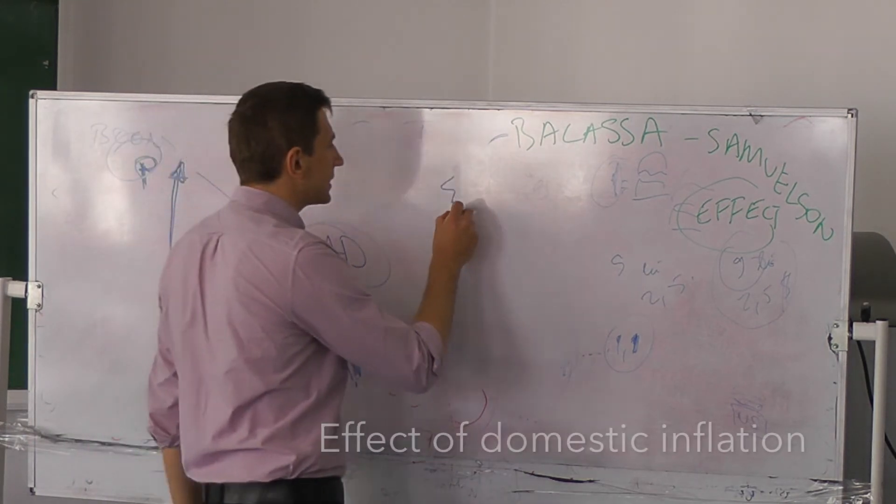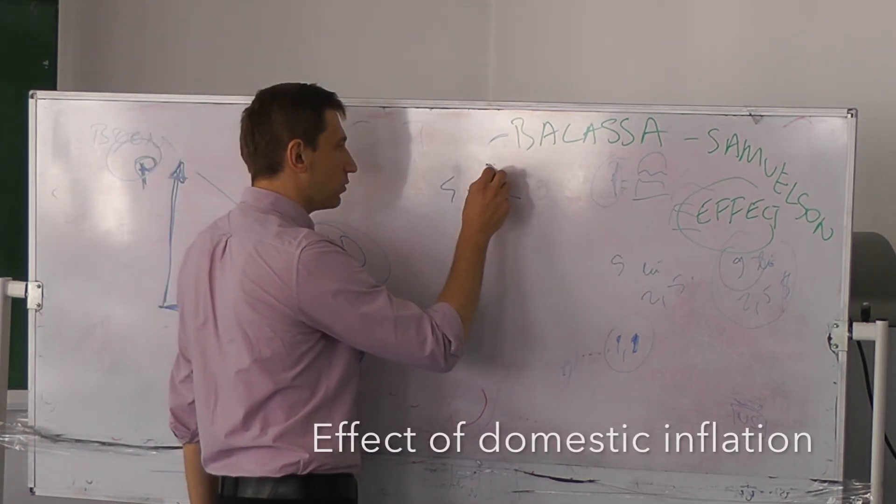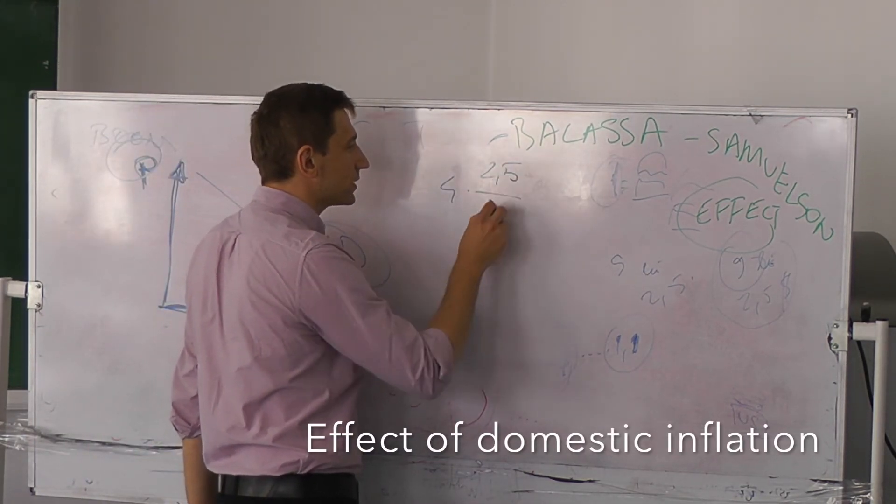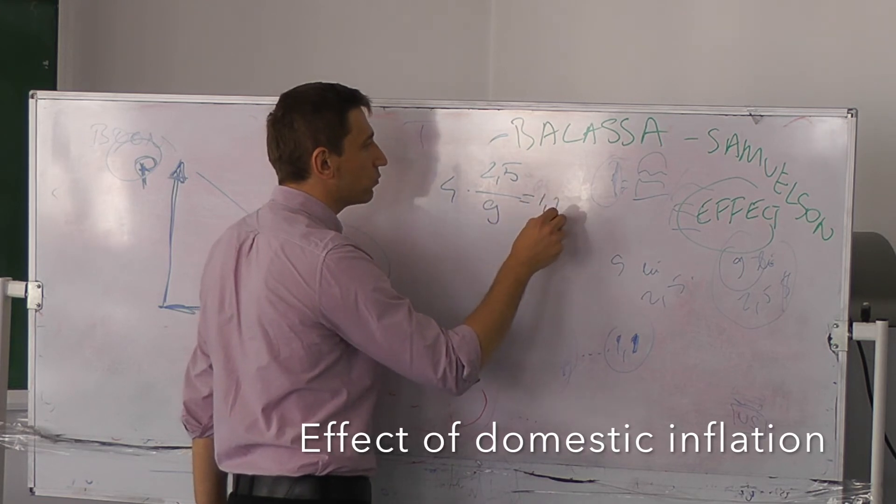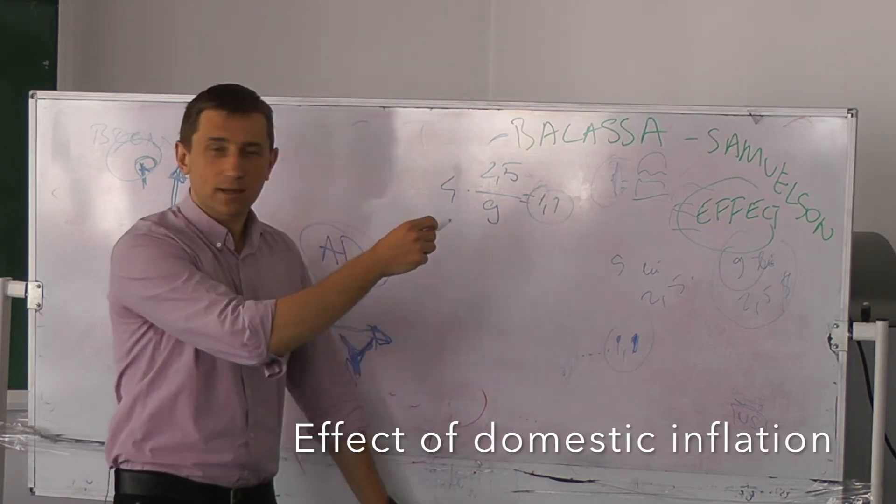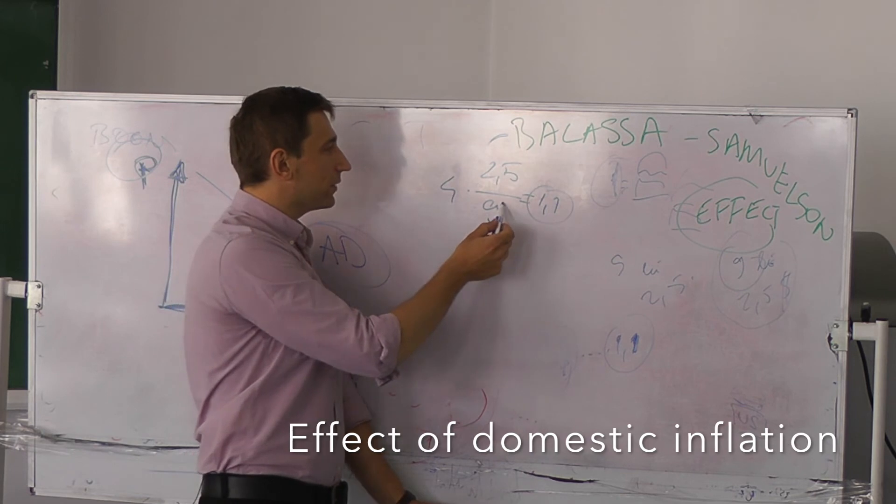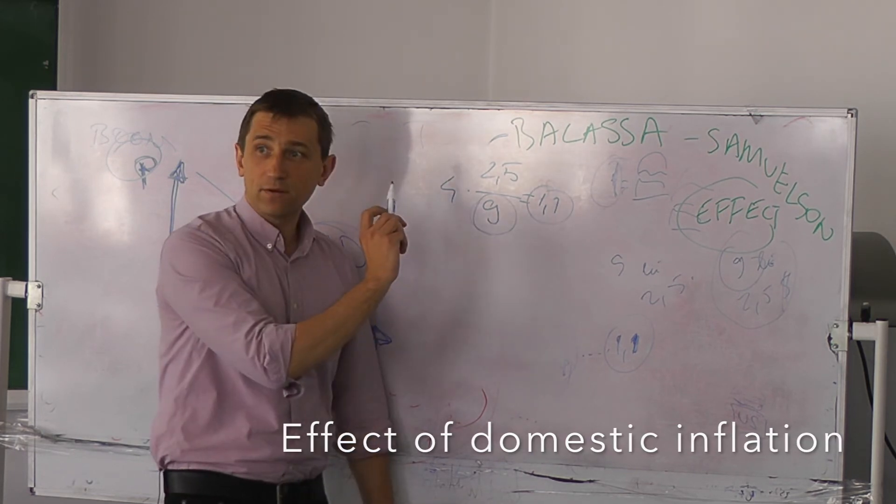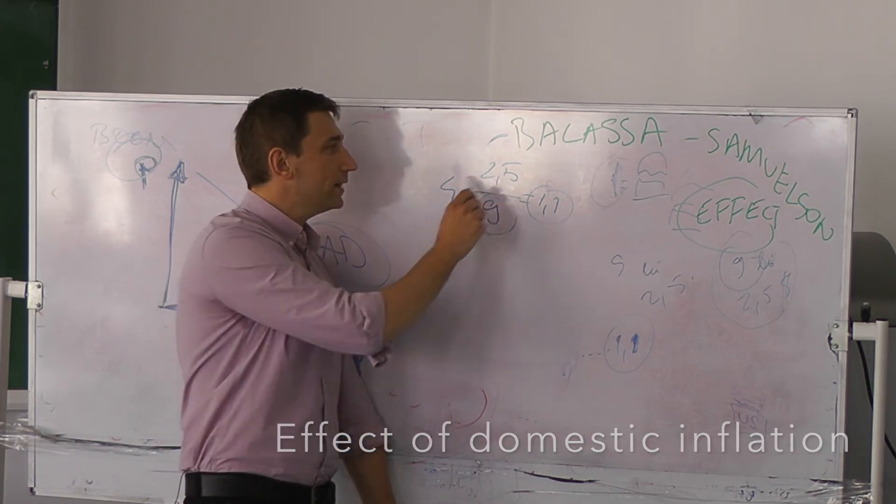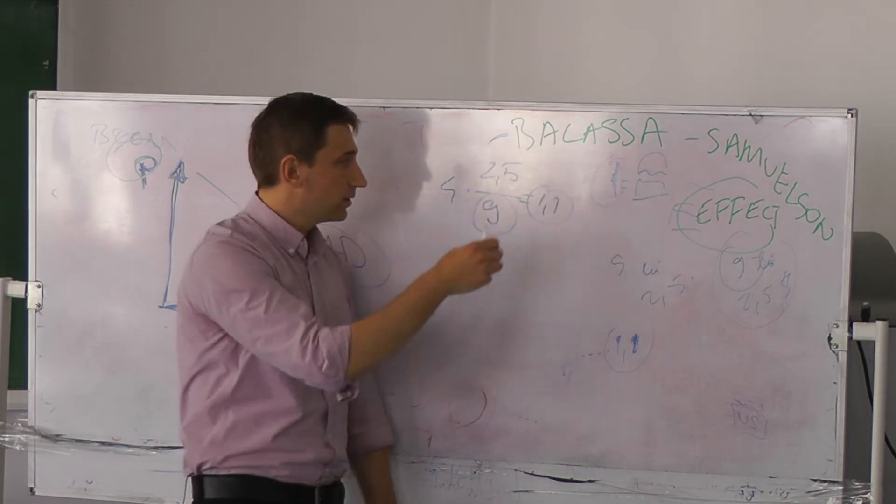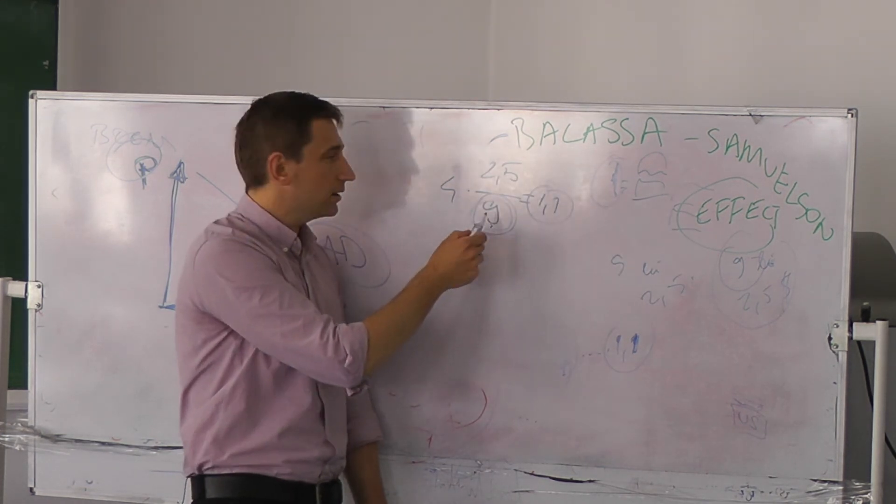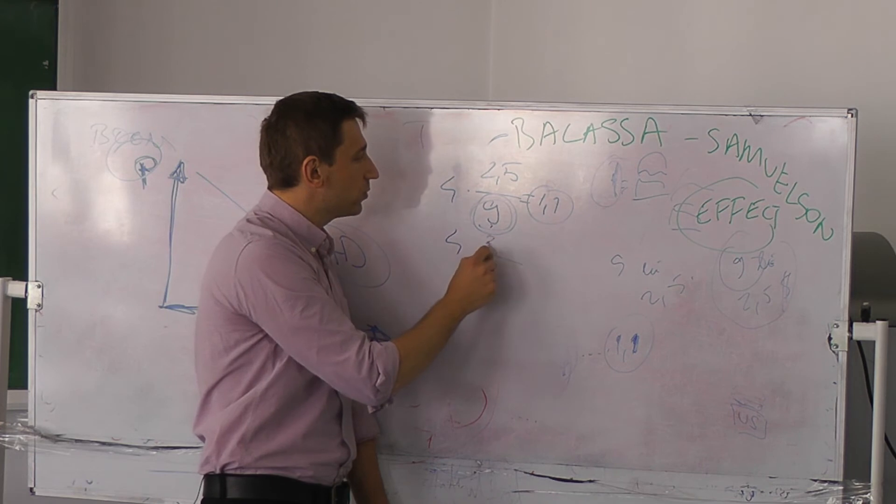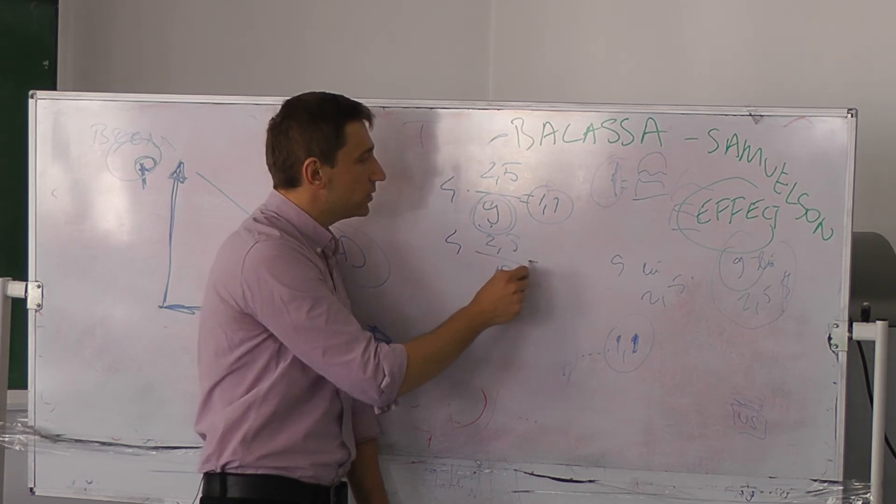You saw this example: 4 here, 2.5 here, 9 there, and there was 1.1 real exchange rate. Now let's suppose I have inflation in Romania - high inflation - and everything else stays the same. So inflation is higher here. I will have 4 times 2.5 over 10, which makes 1.